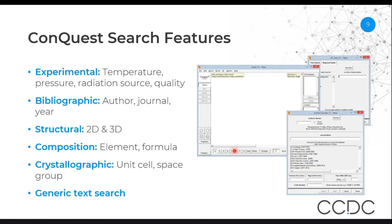It has a wide variety of different search fields. You're able to search based on experimental properties such as the temperature of data collection, the pressure, the radiation source — such as if it's neutron or X-ray — and the quality of the data. It also allows for bibliographic searching, such as the author, the year of publication, or the journal that the structure was published in.